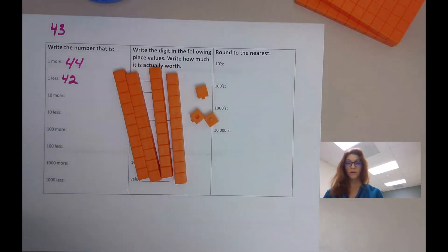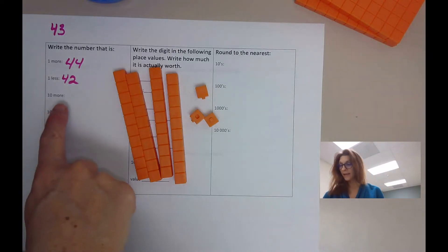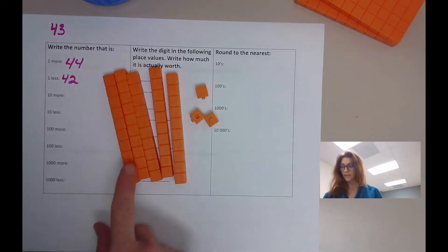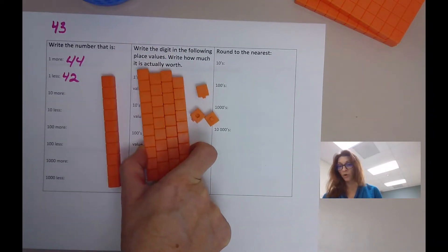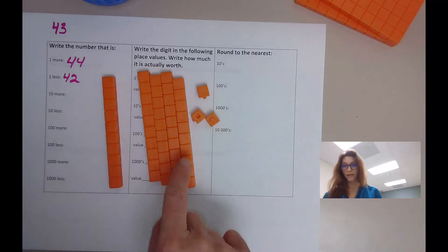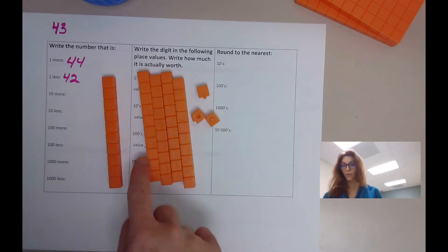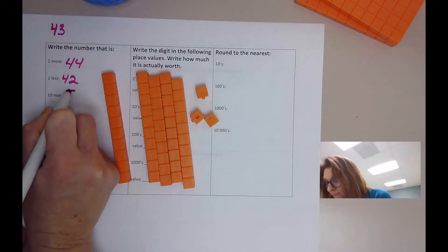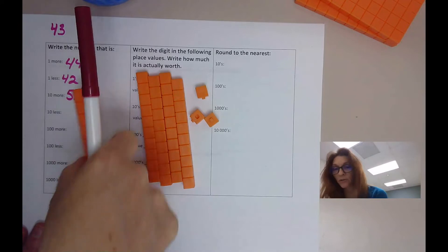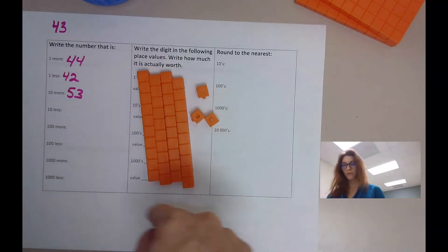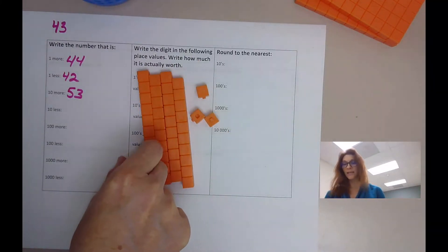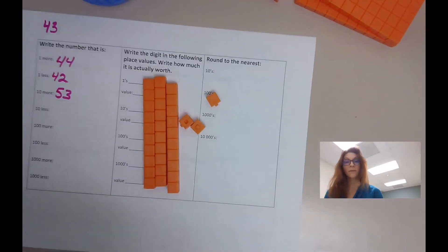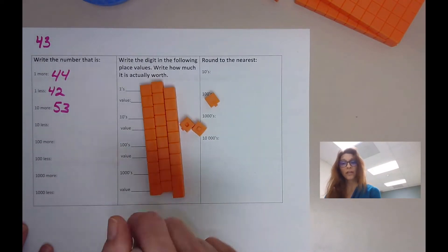Go back to your original number, 43. 10 more. So we take a group of 10 and think about it like this. Now what do we have? We had 43, keep that in your head, add 10, that's 53. Go back to your original number. Here we're back to 43. 10 less, we're taking 10 away. 10 less, 10, 20, 30, 3.